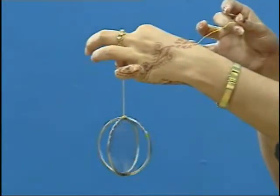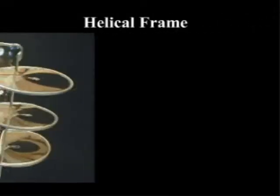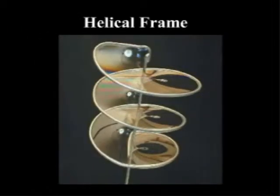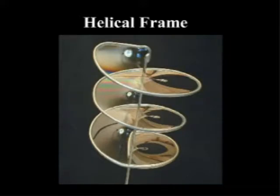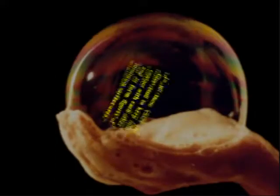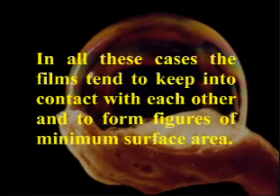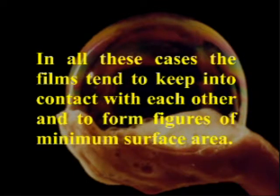Similarly, you take a helical frame. You form a helix just like a spring helix, and you have a wire at the axis of the helix. A helical film will be formed as shown in this diagram. In all these cases, the films tend to keep in contact with each other and to form figures of minimum surface area.